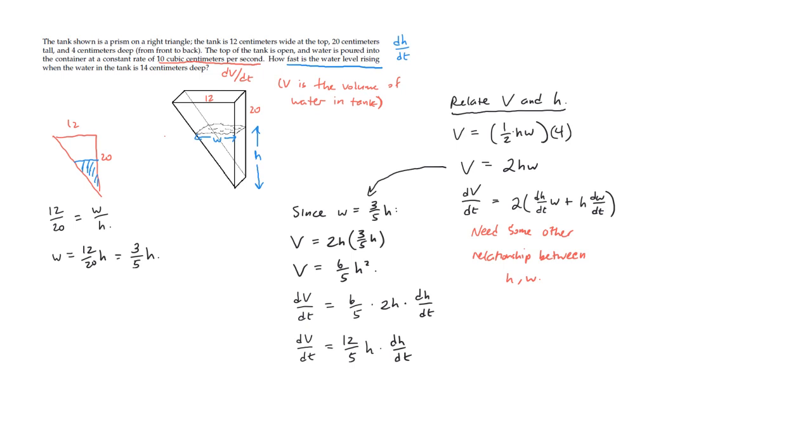All right, so we know that dV/dt at this particular moment, and really at all times, was 10 cubic centimeters per second. We know that h at the moment we're interested in is 14 centimeters. And we are now interested in dh/dt. So let's solve for dh/dt.